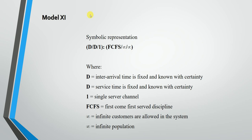Model 11 has the symbolic representation D/D/1:FCFS/∞/∞. The first D represents that the inter-arrival time is fixed and known with certainty — unlike earlier models where Poisson distribution was used for arrivals and exponential distribution for service. The second D represents that the service time is also fixed and known with certainty. 1 is a single service channel, FCFS is the discipline, and the two infinities represent infinite customers and infinite population.